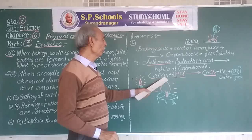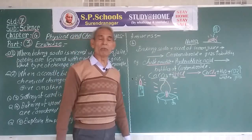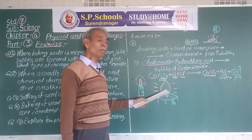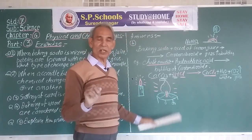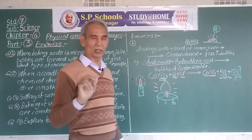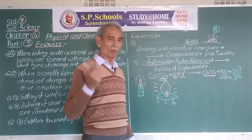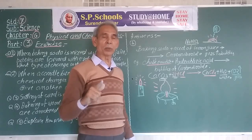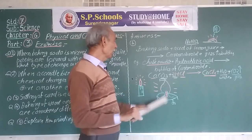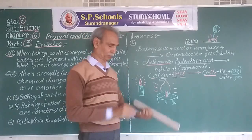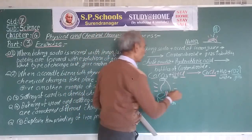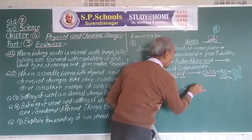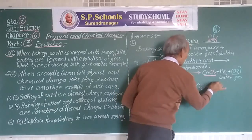Thus, the conversion of gaseous wax on burning, with the help of oxygen in the air, results in carbon dioxide going out into the air. This is a chemical change. Carbon plus oxygen forms carbon dioxide.